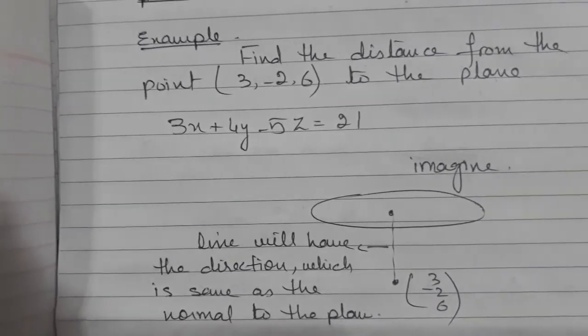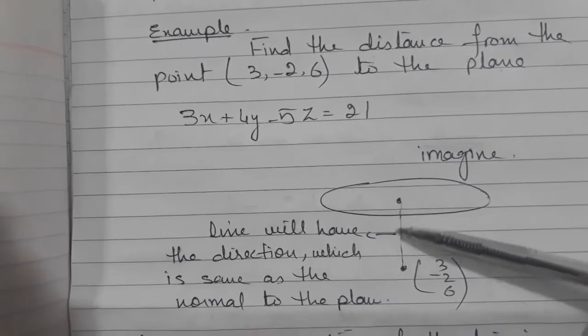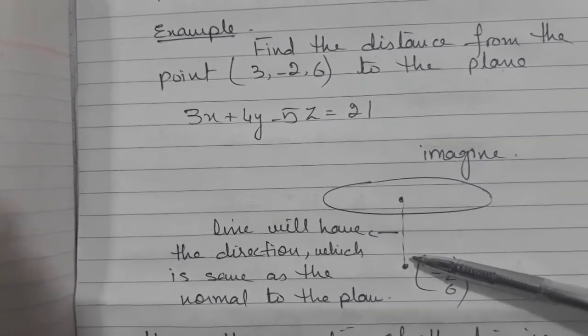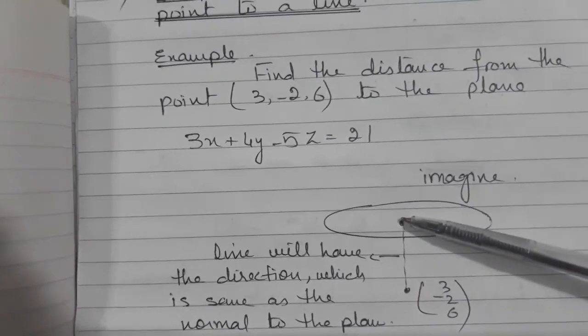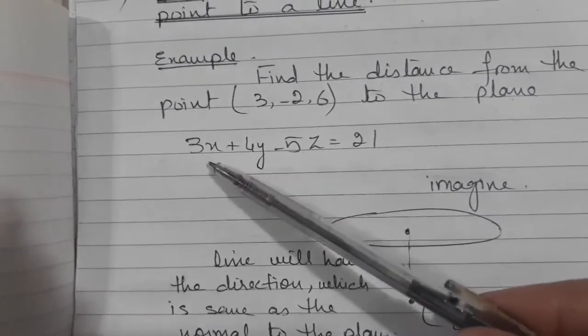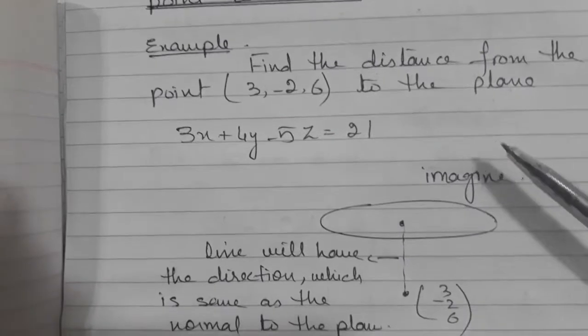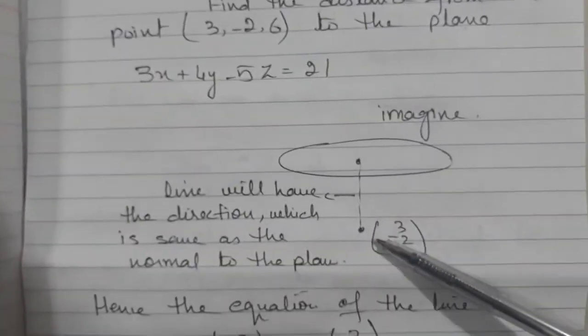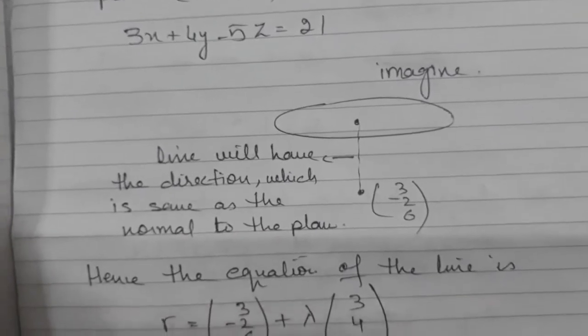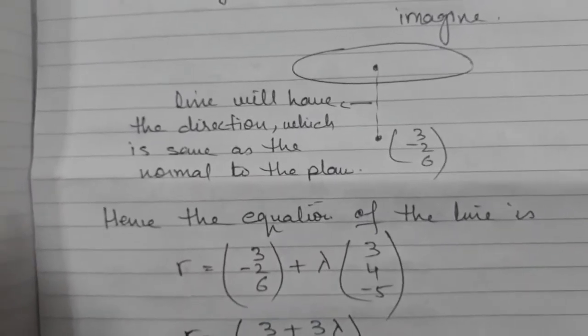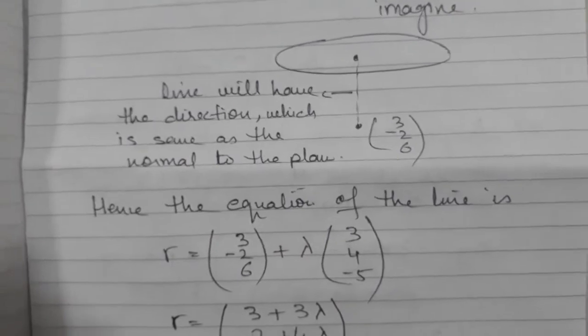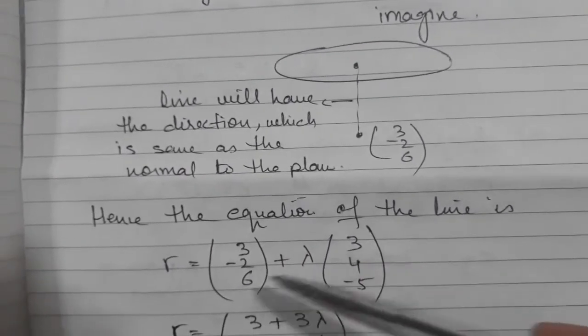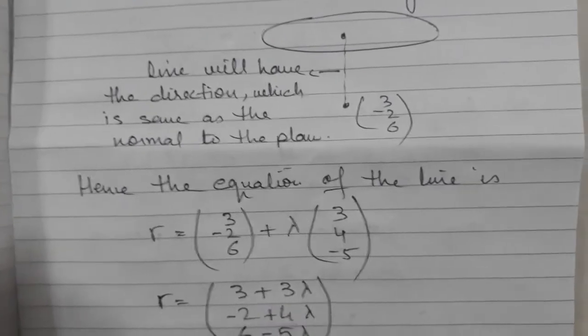To find out this point, I need to know the equation of this line. The equation is easy to find because the line is perpendicular to the plane. The normal (3, 4, -5), which is the normal of the plane, is actually the direction of the line. I know the point, so using the direction and the point, I can find the equation of the line.